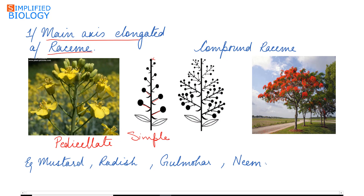When the main axis is branched and each branch is a simple raceme, that is known as compound raceme or panicle.